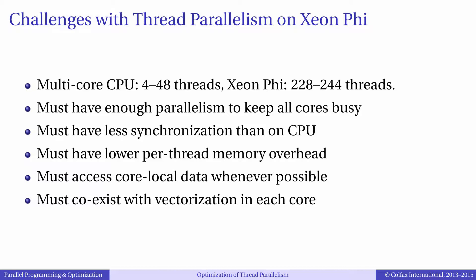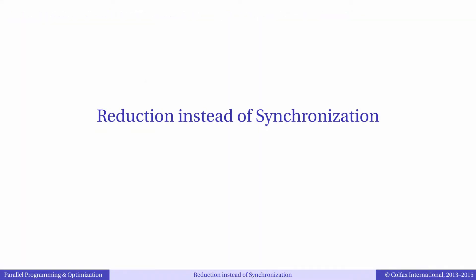Optimization of thread parallelism often overlaps with other areas of optimization. For instance, data locality control in multithreading improves memory traffic, and some techniques discussed for multithreading allow it to coexist with vectorization. The first topic we will discuss on the subject of multithreading is minimizing synchronization. Our discussion will apply to a very common pattern of parallel computations: reduction.